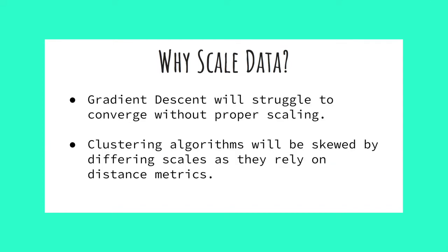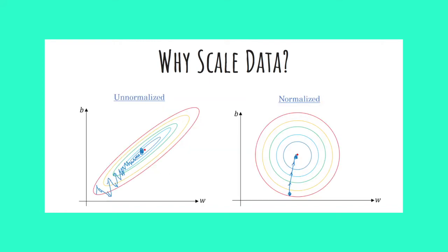So why is scaling important? There are two big reasons. First, gradient descent will struggle to converge, meaning it will be slow to find the best solution or possibly not find the best solution at all. In this image, you can see a representation of the gradient plane of normalized versus unnormalized features. The center of those rings is where the bottom of our loss curve exists and where we want our gradient descent algorithm to take us. The lines drawn through the rings represent the steps we are taking with our gradient descent algorithm.